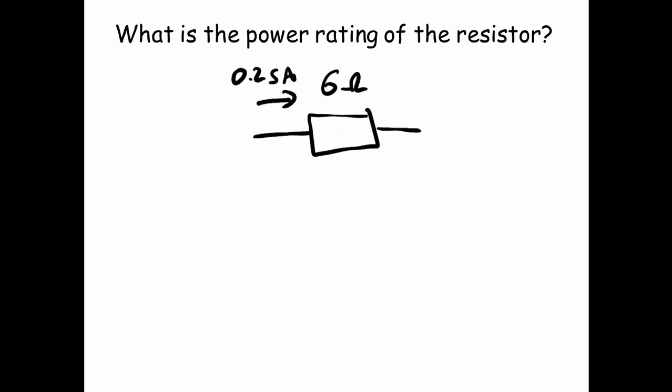What is the power rating of the resistor? P equals IV, so 0.25 amps. But hang on, we don't have voltage. So how are we going to work out voltage? Well, we're going to use V equals IR. So we've got a voltage of 0.25 times by 6. So our current of 0.25 times the resistance of 6, which is 1.5 volts.